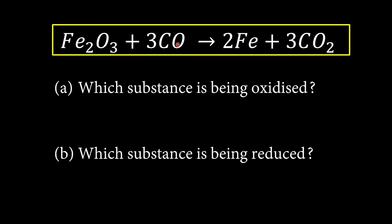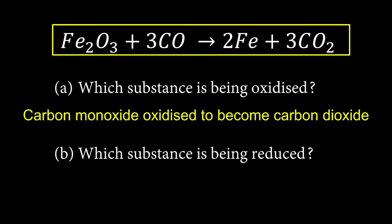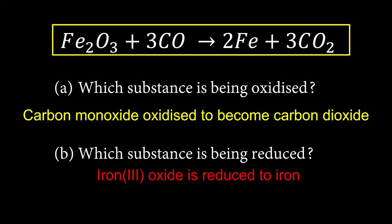Next: iron(III) oxide combined with carbon monoxide forms iron and carbon dioxide. We check HOE and see a transfer in terms of oxygen. The iron oxide has the oxygen at the start but ends up as iron — it loses the oxygen. Meanwhile, carbon monoxide gains one more oxygen atom to become carbon dioxide. Gaining oxygen is oxidation, so carbon monoxide is oxidized to become carbon dioxide. Iron(III) oxide loses the oxygen, so it is reduced to become iron.